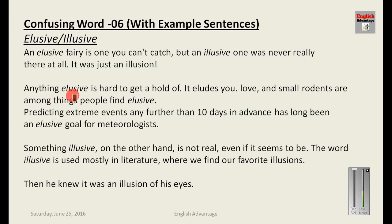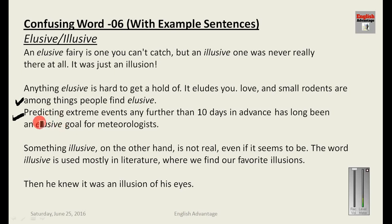Anything elusive is hard to get a hold of — it eludes you. Love and small rodents are among the things people find elusive. Example: 'Predicting extreme events any further than 10 days in advance has long been an elusive goal for meteorologists.' We cannot use illusive here — that would make the sentence wrong. Something illusive, on the other hand, is not real — it is imaginary. The word illusive is used mostly in literature where we find our favorite illusions.